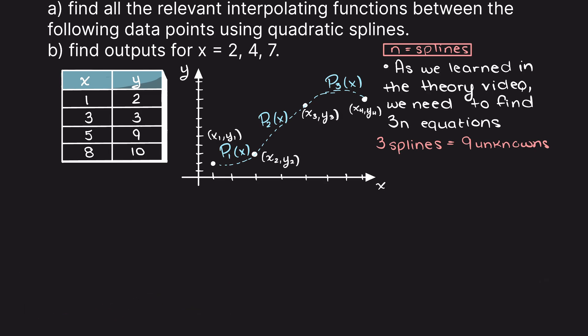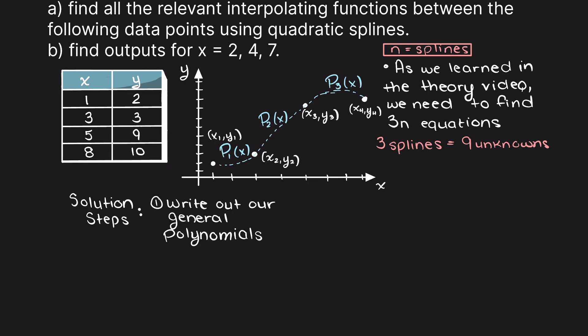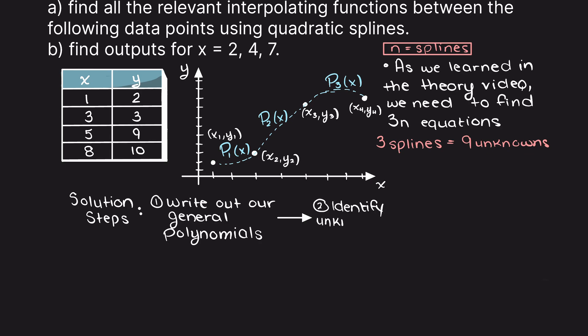Before we get into solving this problem, I am going to develop a plan to find our solution. First, we will write out our quadratic functions for all three interpolating polynomials. Second, we will identify our 9 unknowns. Third, we will be presented with a system of equations to solve for all unknowns. Then lastly, once we have our whole system solved, we just need to plug in our x inputs for the second part of the question.